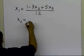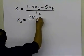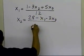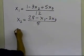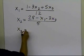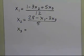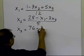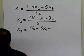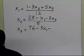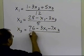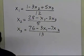So x1 equals 1 minus 3x2 plus 5x3, divided by 12. Then x2 is written as 28 minus x1 minus 3x3, divided by 5. And x3 is rewritten as 76 minus 3x1 minus 7x2, divided by 13 — because 13 is the coefficient of x3.